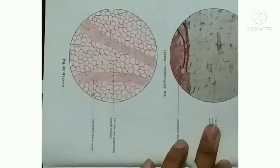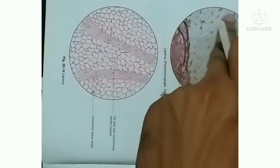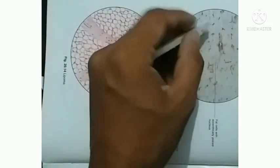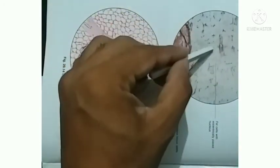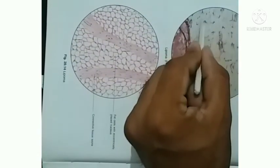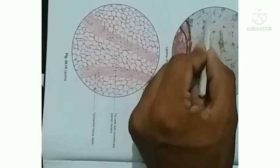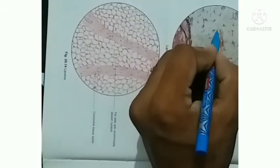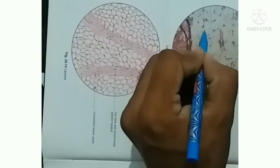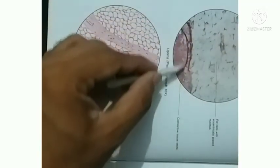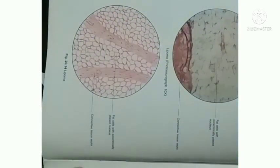Come to show the lipoma in the histology, how it looks. This is the histological slide in which you will see these are all the adipocytes with their eccentric nucleus. See, this is eccentric nucleus of the adipocytes, and this is the connective tissue septa which is present in it.